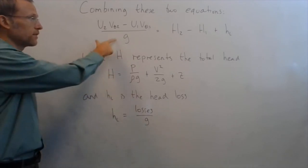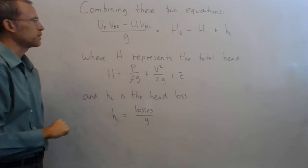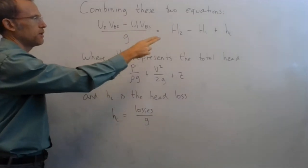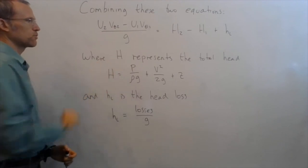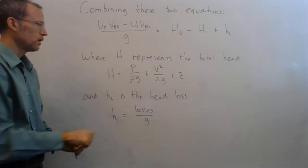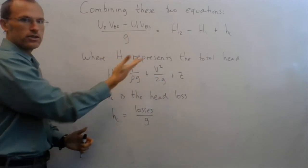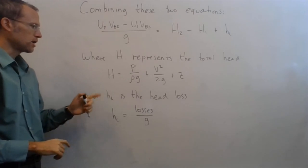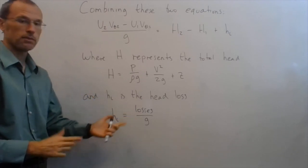So setting those equal and technically dividing by g, I get u2 V theta 2 minus u1 V theta 1 over g is h2 minus h1 plus little hl. Here h represents my total head, so basically the whole left side of Bernoulli's equation, p over rho g plus v squared over 2g plus z, so that's for 1 and 2 respectively, and hl is my head loss in terms of the previous equation, that's just my losses divided by g.